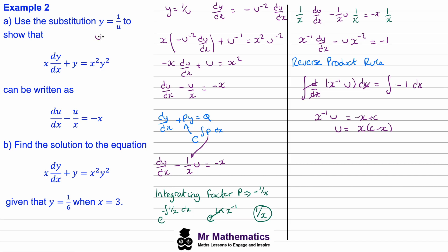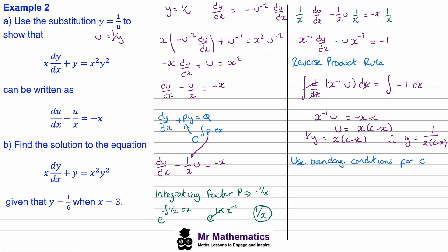Remembering that u equals 1/y, we substitute to get 1/y equals x(c minus x), and therefore y equals 1 divided by x(c minus x). At this point we can use the boundary conditions to find c.